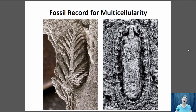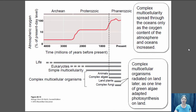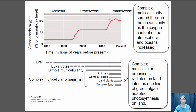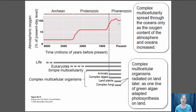Part of the reason multicellularity arose late is that the environment wasn't suitable prior to that. There wasn't enough oxygen to support a large complex multicellular organism — you can't rely on diffusion alone when you have large groups of cells all needing oxygen. We had to wait until unicellular photosynthetic organisms like cyanobacteria and unicellular algae produced enough oxygen in the atmosphere. If you look at a graph correlating oxygen levels in the atmosphere, you can see a burst of photosynthetic prokaryotes and then eukaryotes, and eventually oxygen reaches the level where complex multicellular organisms can be supported.